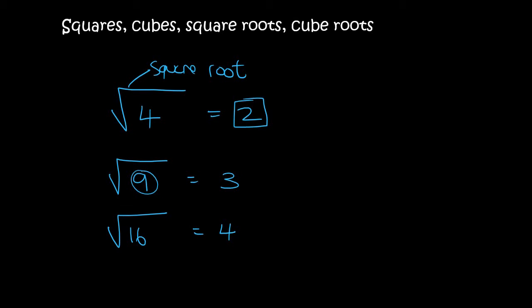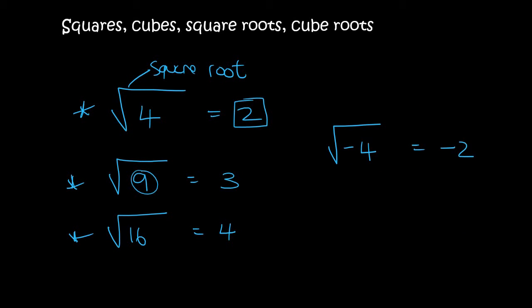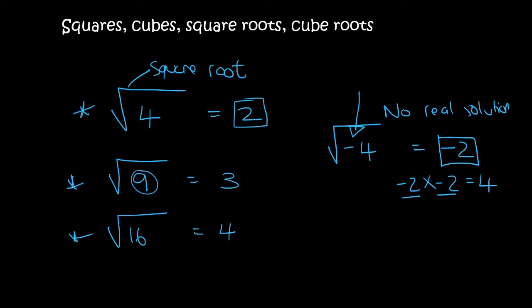Let me quickly prove it. We know that 2 times 2 is 4, and 3 times 3 equals 9, and 4 times 4 is equal to 16. Now what about the square root of minus 4? Some people want to say that's minus 2. But is minus 2 times minus 2 equal to minus 4? No — minus 2 times minus 2 is positive 4. So it is impossible to have a negative inside a square root. We call it no real solution.